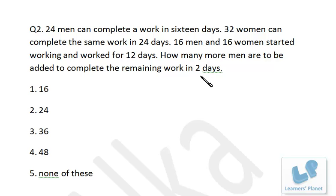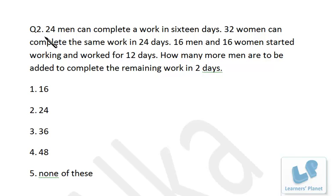Since the available days are halved from four to two, the number of persons must be doubled. We already have 24 men, so 24 more persons need to be added — making 48 in total — to complete the remaining one-fourth of the work in two days.